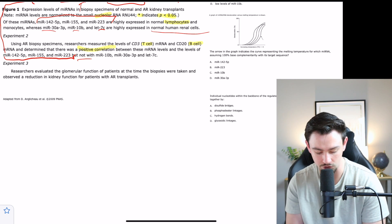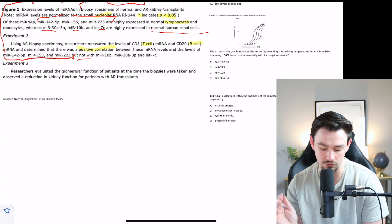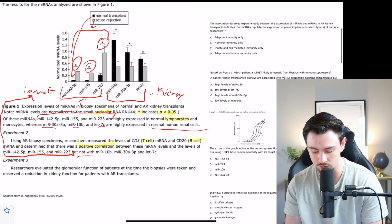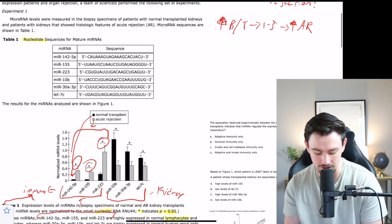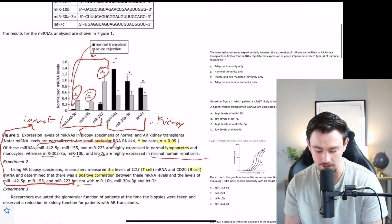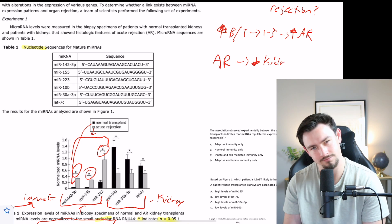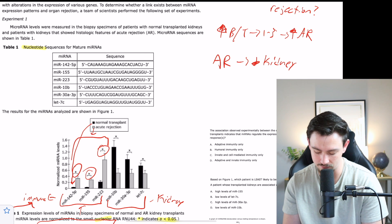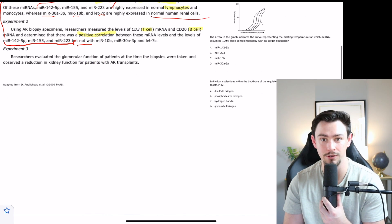Experiment three says researchers evaluated the glomerular function of the patients at the time the biopsies were taken and observed a reduction in kidney function for patients with acute rejection transplants. That kind of makes sense. If your kidney rejects, then it's going to lead to decreased kidney function. Nothing super groundbreaking about that. That's that passage, pretty straightforward. Let's go ahead and look at the questions.